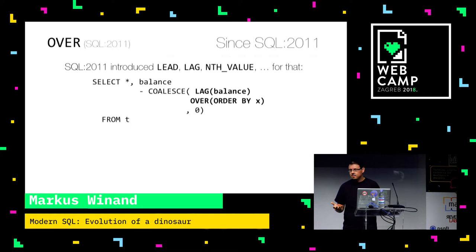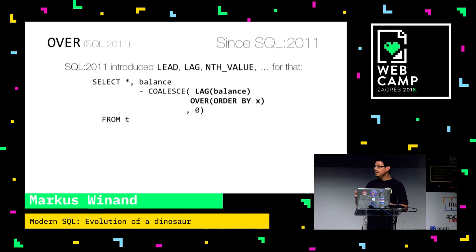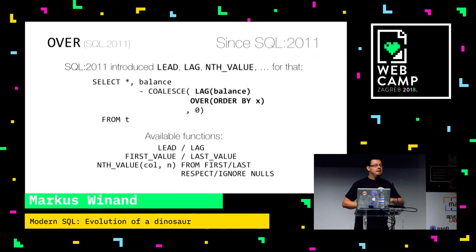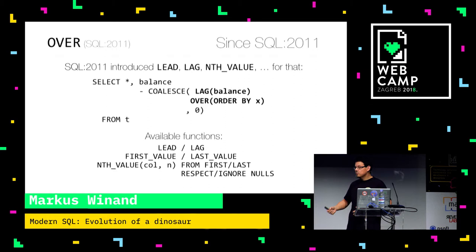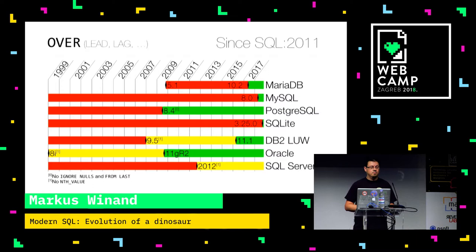But that's still not so easy to understand, so we have a simpler solution now: LAG. I would just like to access the previous row, and now we have a function for that. For LAG you can say not only lag one row — you can give it a parameter, like lag three rows behind. You can even say LEAD — you can look into the future. And we also have FIRST_VALUE, LAST_VALUE, NTH_VALUE. We can ignore NULLs or respect NULLs. So that's a really powerful tool which is easy to understand. All seven databases I'm testing already support lead and lag.